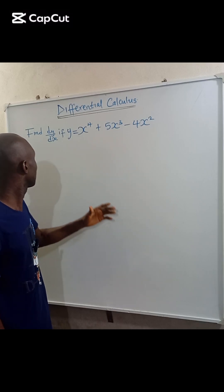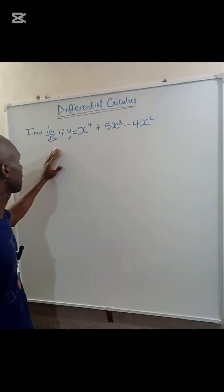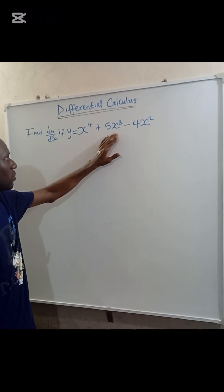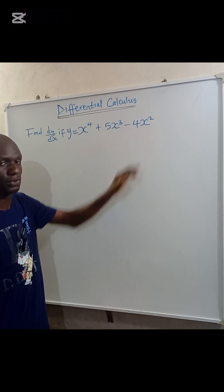Hi, we are given to find dy/dx if y equals x to the power of 4 plus 5x to the power of 3 minus 4x to the power of 2.